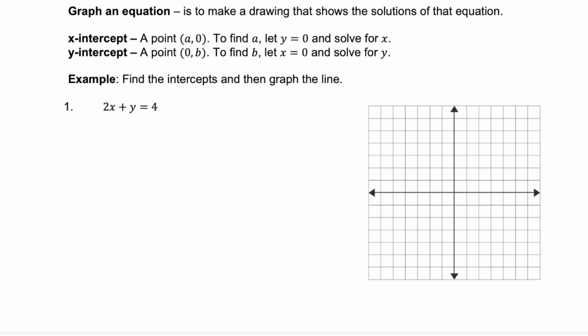And we're going to graph it using the intercepts. Remember that the x-intercept, that is always the point when y equals zero. So we solve 2x plus zero equals four. Or 2x equals four. Divide both sides by two, and we get x equals two.